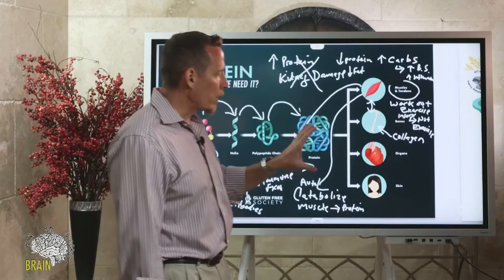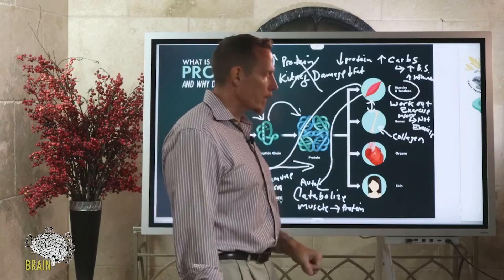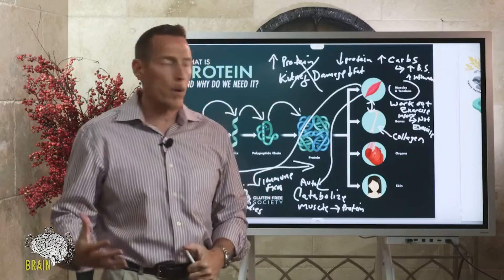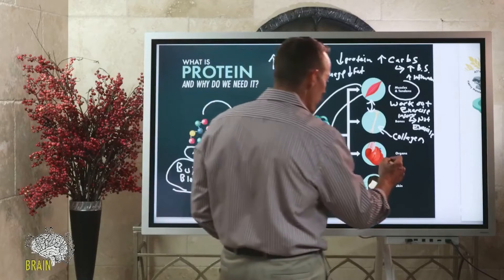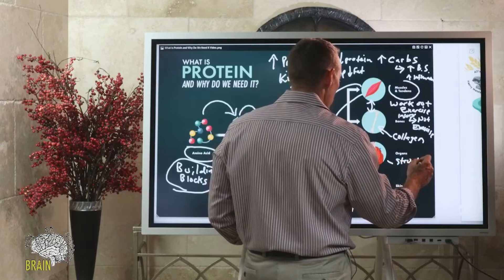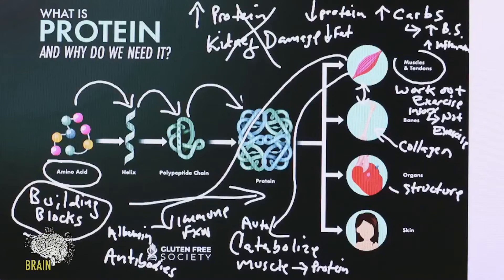We also have the importance of protein in our organs. Our organs require protein. Some of our organs require protein for structure - just their shape and structure - but we also have to understand that our organs produce hormones.